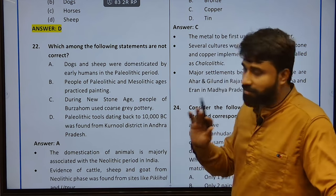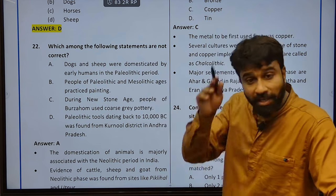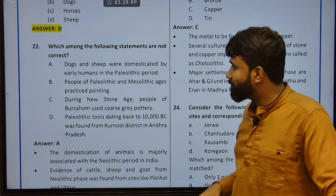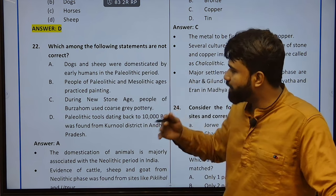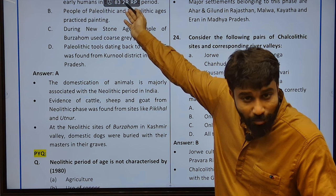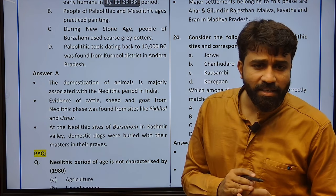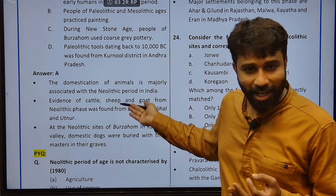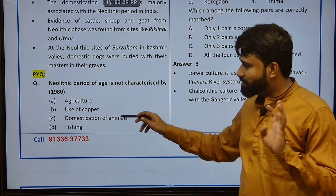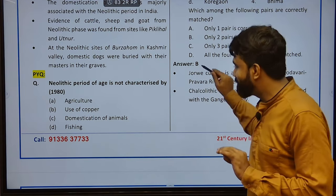Which among the following statements are not correct? Dogs and sheep were domesticated by early humans in the Paleolithic period — no. People of Paleolithic and Mesolithic ages participated in painting — yes, Bhimbetka is such an example. During the new stone age, people of Burzahom used coarse grey pottery — actually, the question is asking about the incorrect one; the first statement is incorrect. Paleolithic tools dating back to 10,000 BC were found from Kurnool district in Andhra Pradesh. The Neolithic period is characterized by agriculture, use of copper, domestication of animals and fishing — this was a PYQ from 1980.